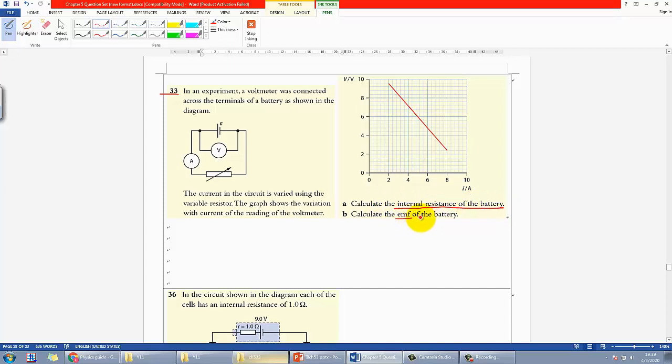If you remember, the slope equals negative r, where small r represents the internal resistance, and the EMF will simply equal the y-intercept. So basically, you just have to find them.